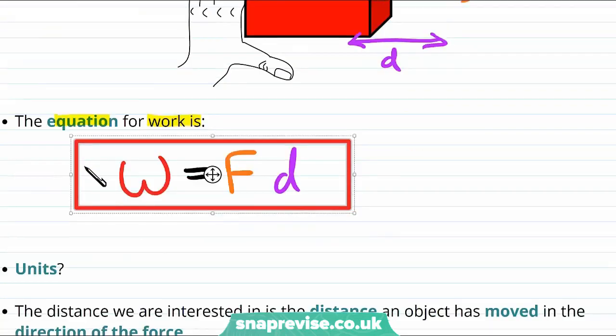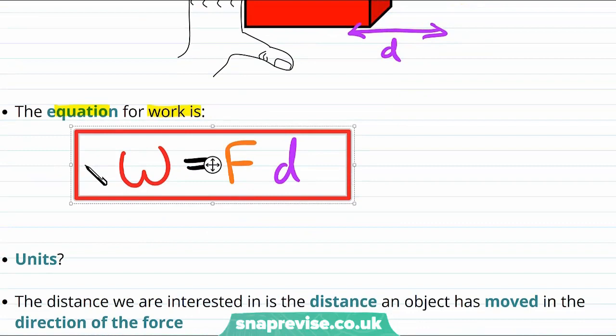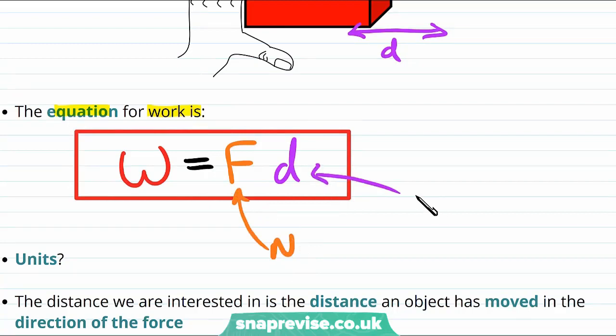And now let's take a look at the units of the quantities in this equation. We know that force is measured in newtons. We know that distance is measured in meters. Finally, the work done, we agreed, is an energy transfer, so it is measured in joules.